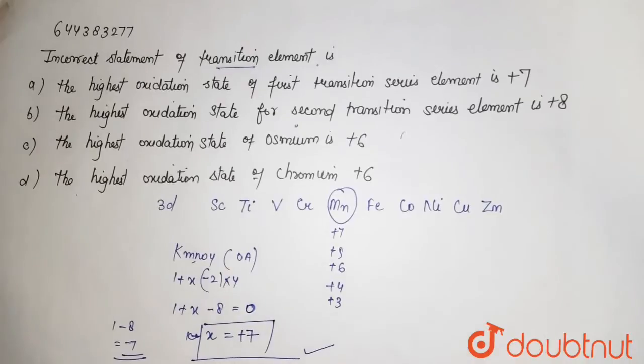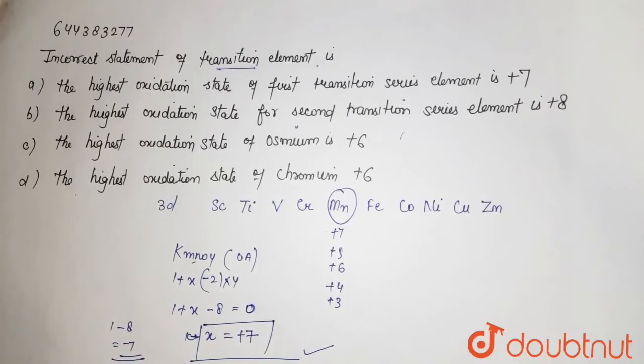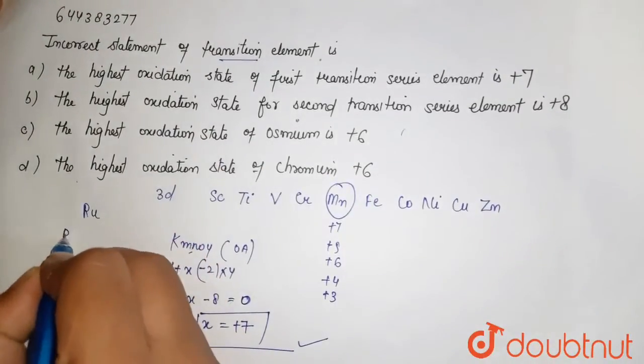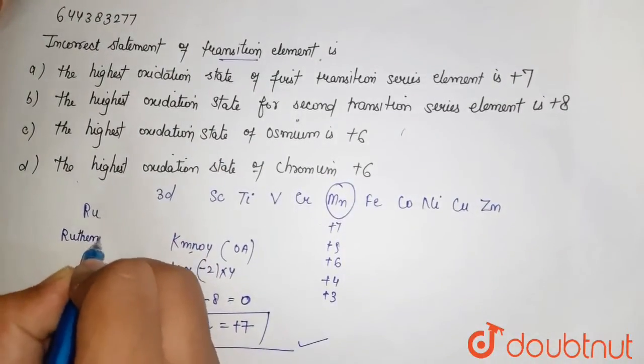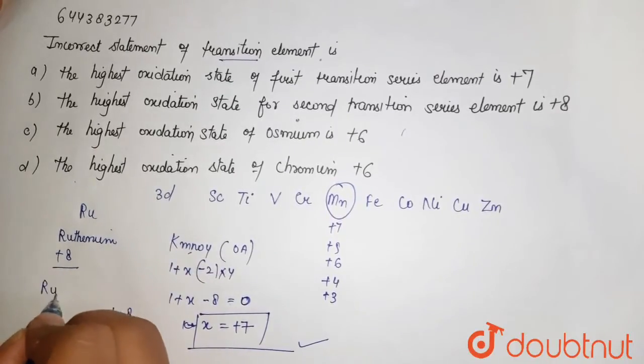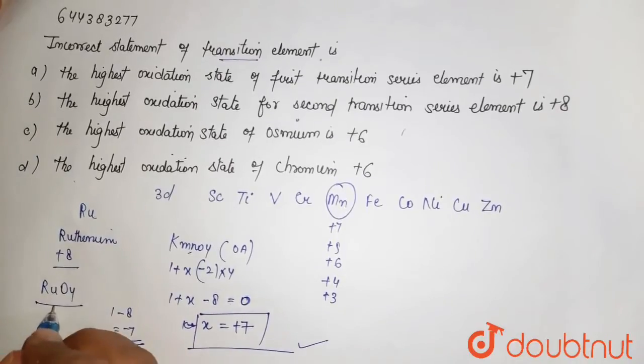So manganese shows the maximum state of +7. Then the highest oxidation state for second transition series element is +8. Here we have ruthenium. It shows maximum +8 oxidation state in the compound RuO4, which is used as an intermediate in purification of ruthenium from the ores.